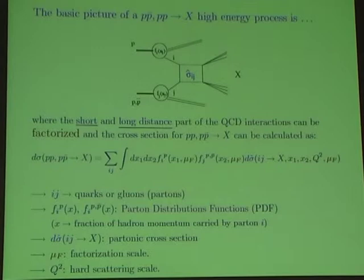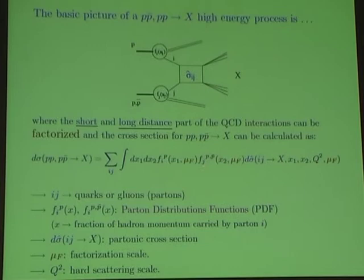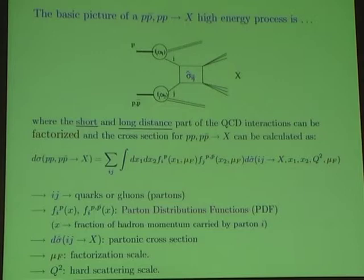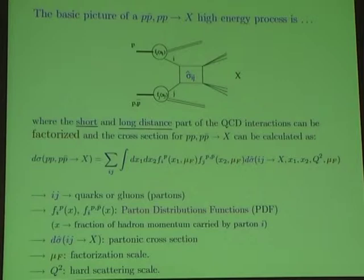We combine the parton-level cross-section with parton distribution functions — the probability of finding parton i and parton j in hadron one or hadron two with a given momentum fraction x1 and x2 of the parent hadrons. This factorization takes place at a scale mu_F, the factorization scale. The total hadronic cross-section is obtained as a sum over all possible partons that can generate the final state X. This is the first step in the calculation of the hadronic cross-section.